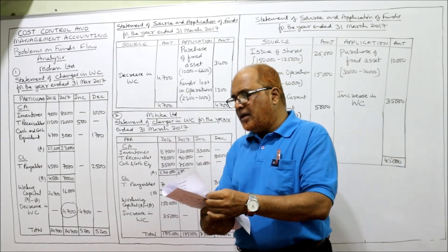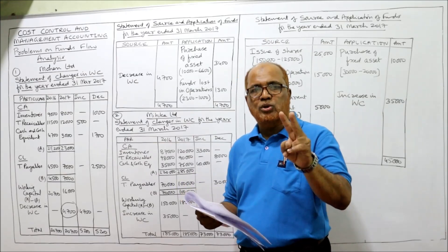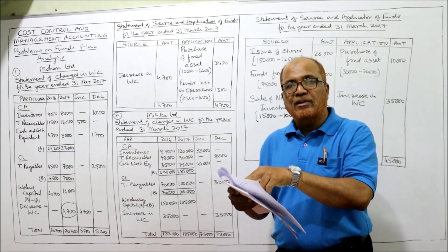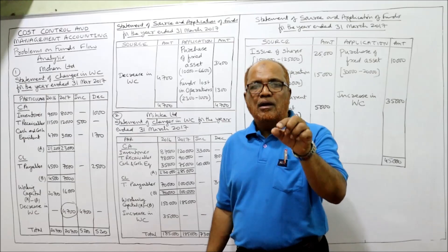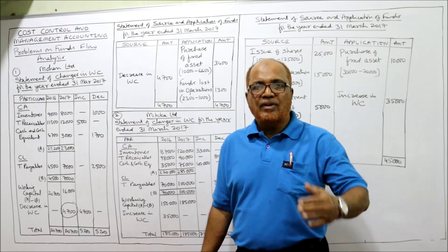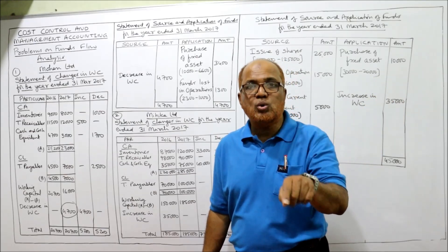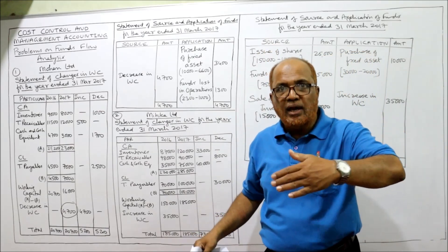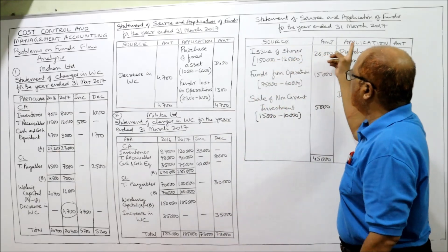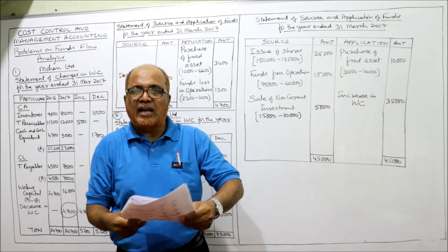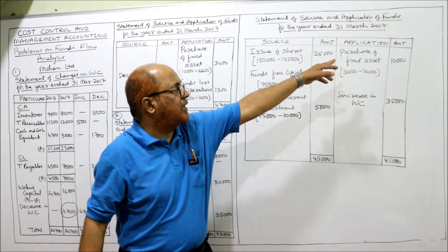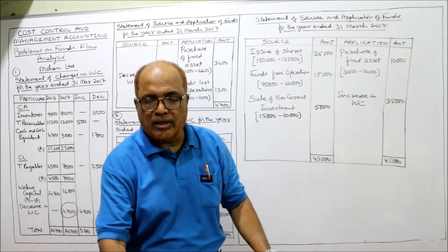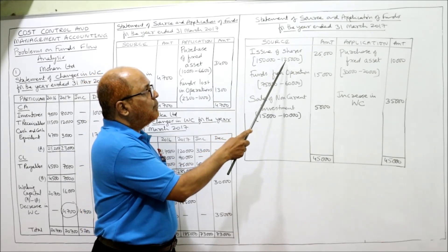Problem number 2: the following are the balance sheets of Mijica Limited, from which you are asked to prepare the funds flow statement. Last year 2016, current year 2017. Share capital: last year 1,25,000, current year 1,50,000 — during the current year shares were issued. When shares are issued by the company, there is inflow of cash — that is a source. Issue of shares: 1,50,000 minus 1,25,000 equals 25,000.